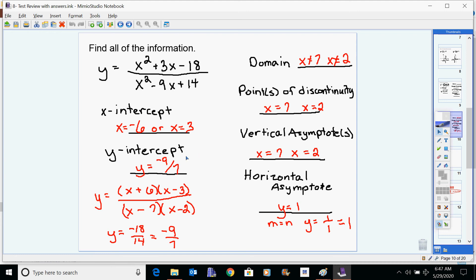The y-intercept comes from what happens when x is zero. So if you plug in zero squared plus three times zero, these two parts don't even count. Zero squared minus nine times zero, these two parts don't even count. And you're left with negative 18 over 14, which can be reduced. So that's where the y-intercept of negative nine-sevenths comes from.